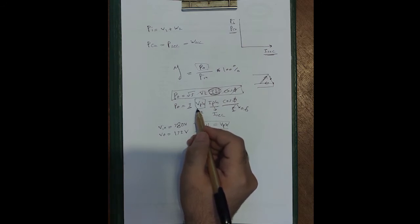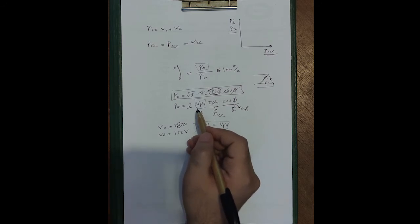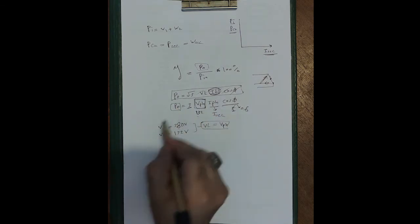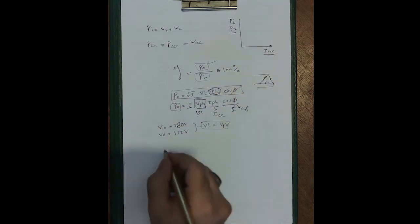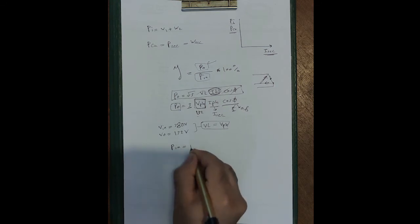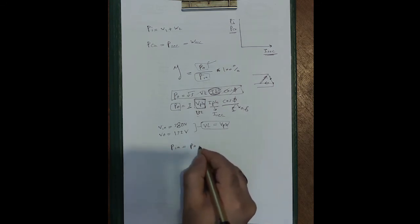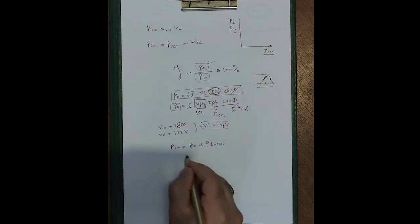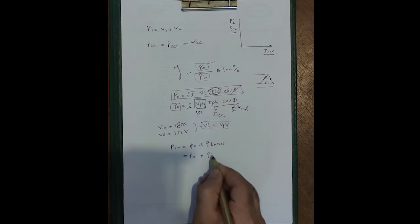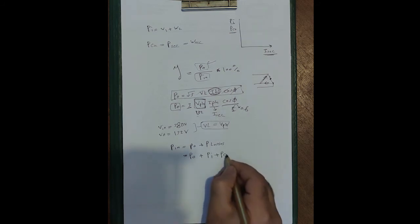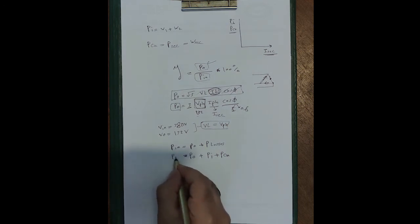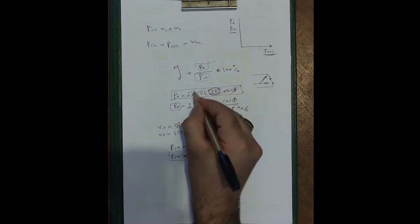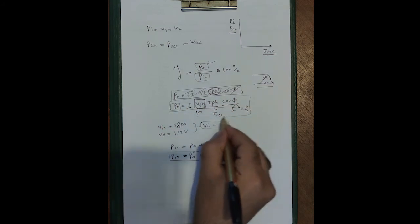Since the question says 'predict,' that means we assume some values — not all values are available, so we must assume some. We take V_phase = 132V. The output power plus losses gives the input power. We can use the efficiency law with the available data.